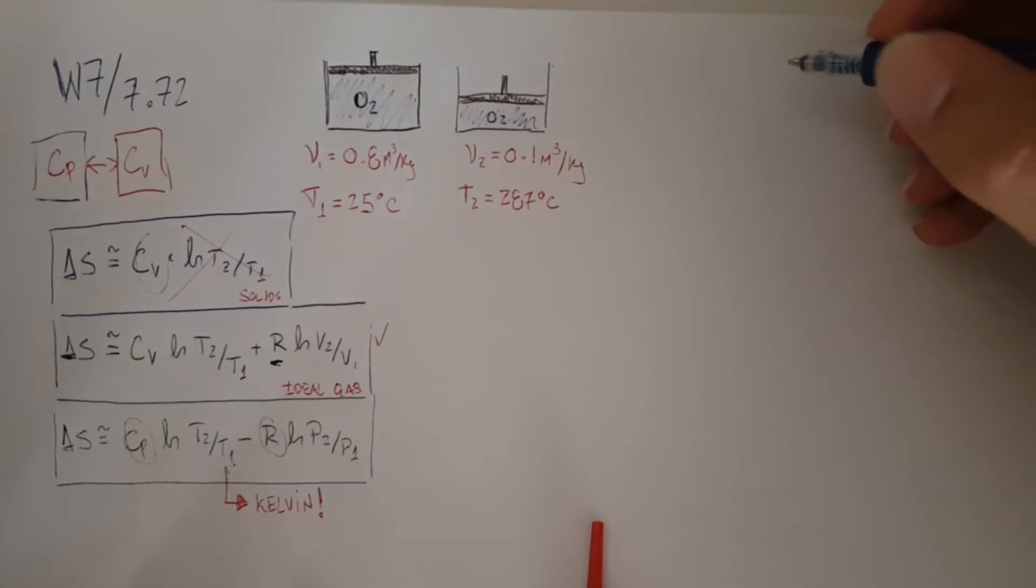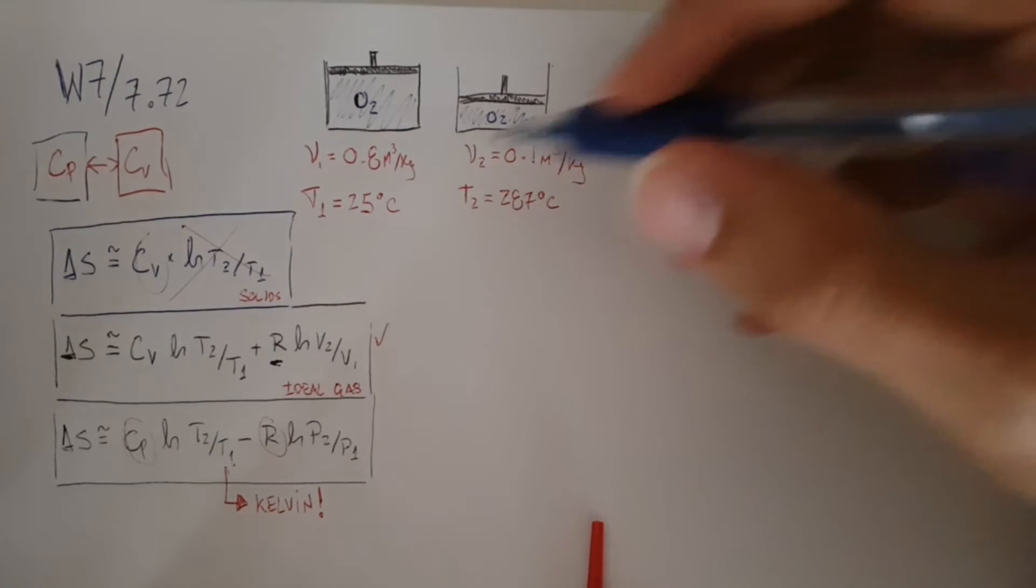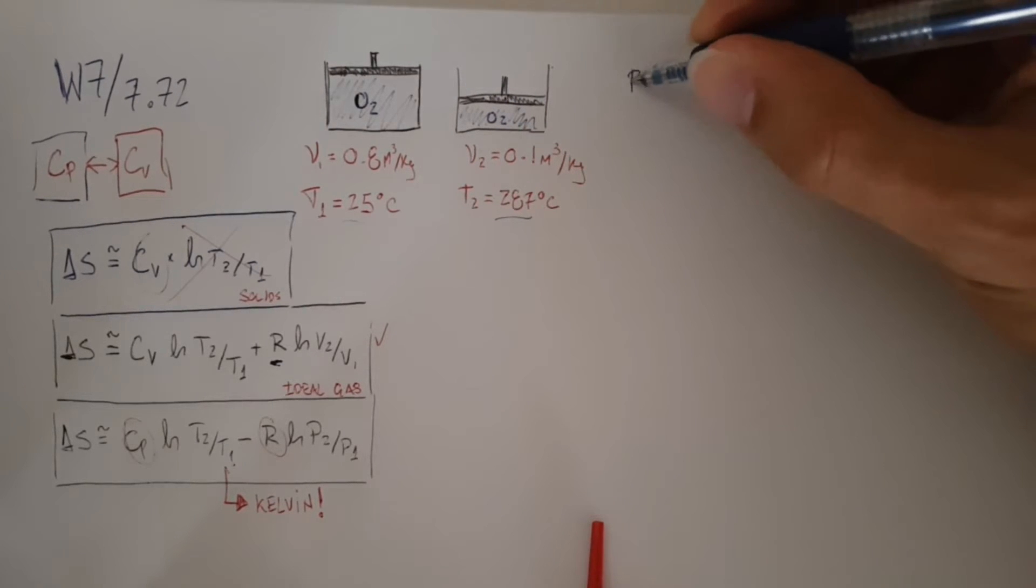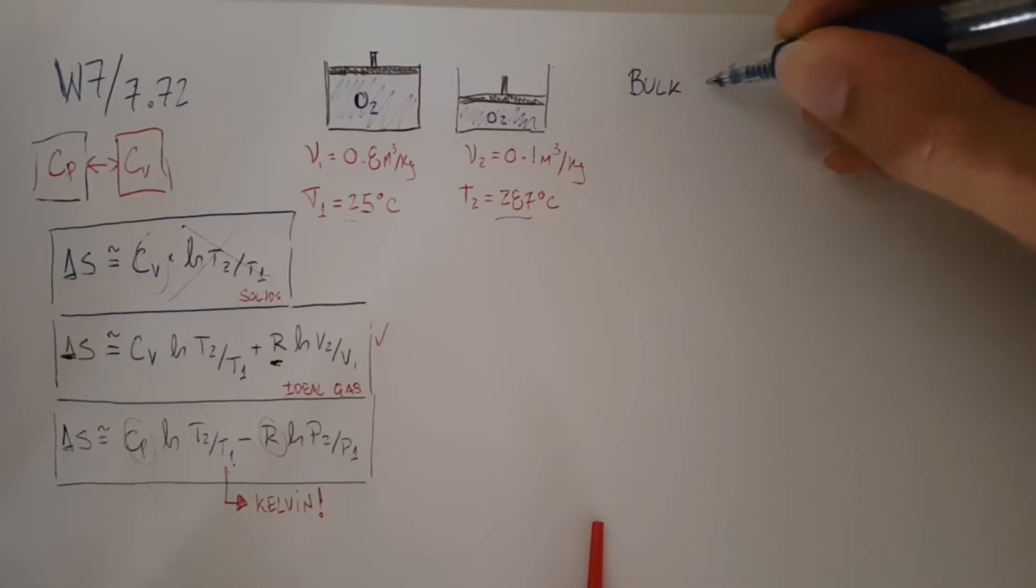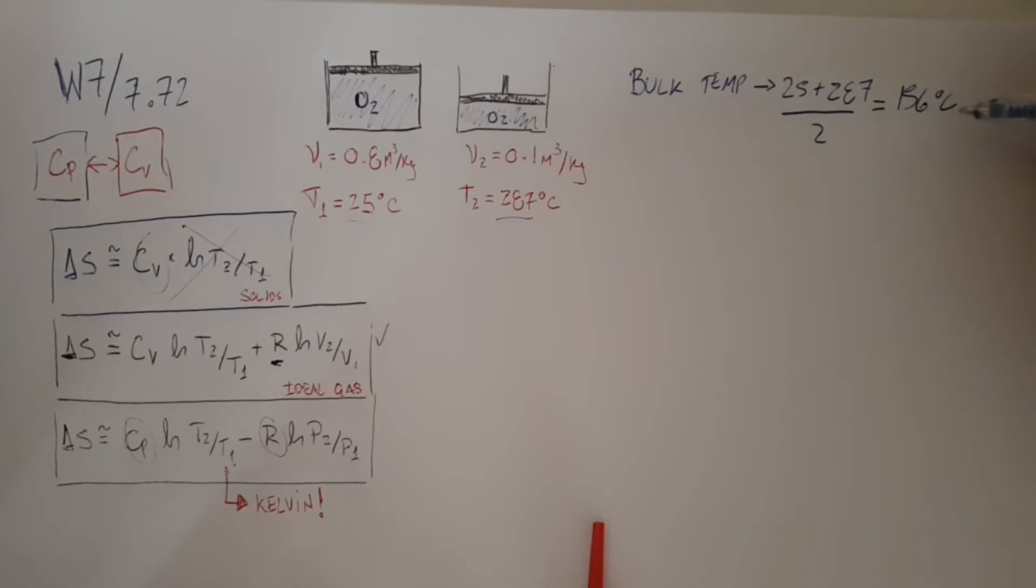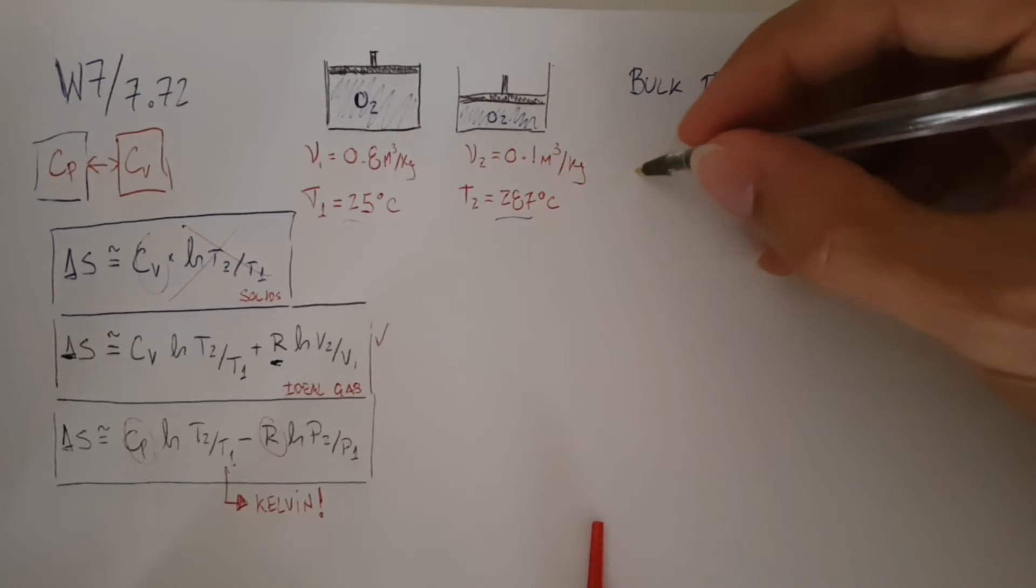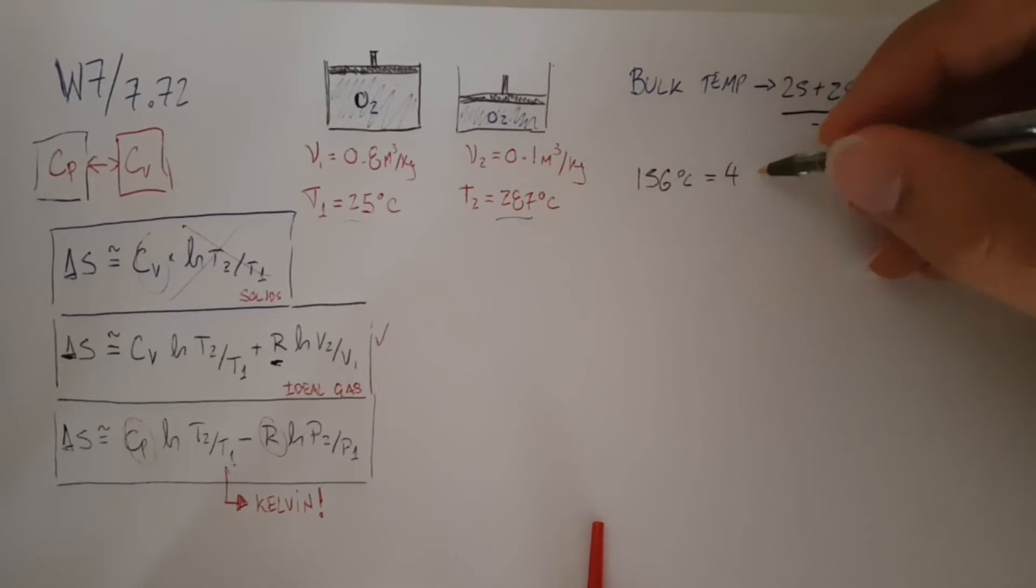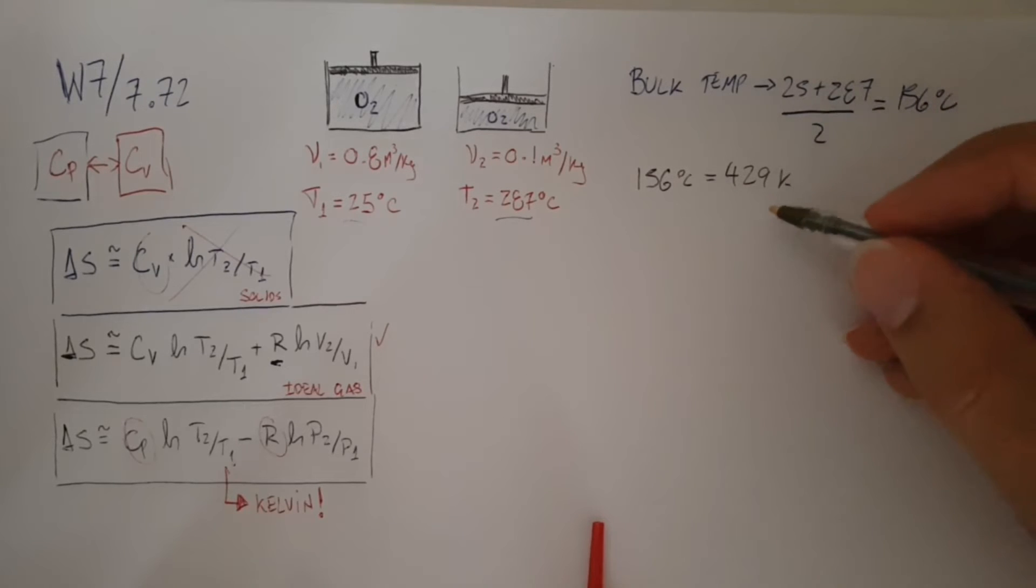We're going to grab CV, and we know CV changes from 25 to 287, so what we're going to do is grab the CV at the mean temperature, or bulk temperature as we call it. Bulk temp is going to be 25 plus 287 over 2, which is 156°C, which is the same thing as 429 Kelvin when we add 273.